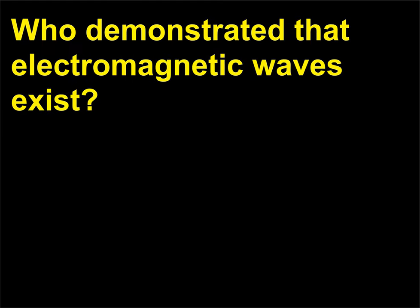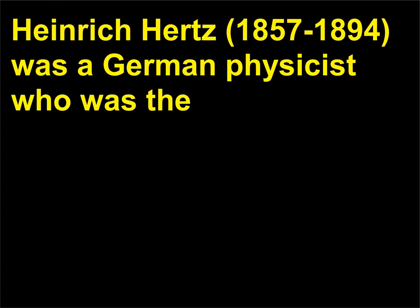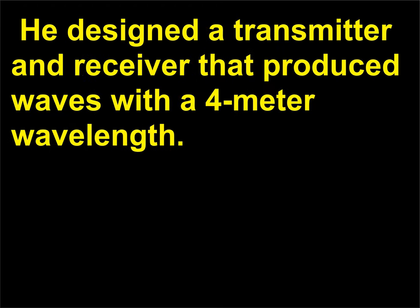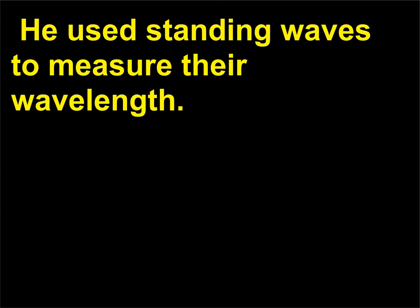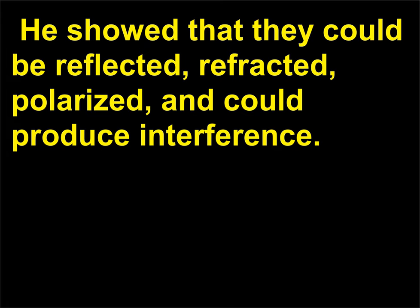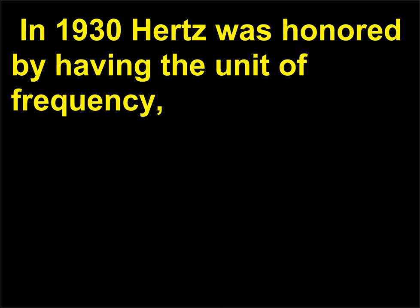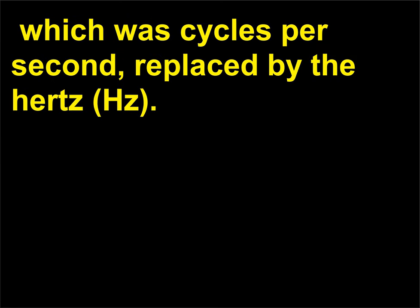Who demonstrated that electromagnetic waves exist? Heinrich Hertz, 1857 to 1894, was a German physicist who was the first person to demonstrate that electromagnetic waves existed. He designed a transmitter and receiver that produced waves with a 4 meter wavelength. He used standing waves to measure their wavelength. He showed that they could be reflected, refracted, polarized, and could produce interference. It was Hertz's breakthroughs in electromagnetic waves that paved the way for the development of radio. In 1930 Hertz was honored by having the unit of frequency, which was cycles per second, replaced by the Hertz.